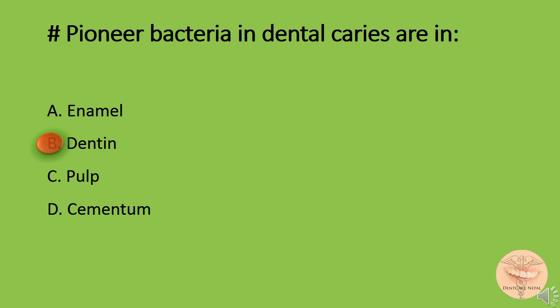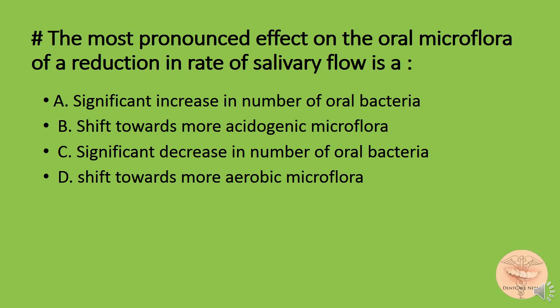The correct answer is B: dentin. The most pronounced effect on the oral microflora of a reduction in rate of salivary flow is: A) a significant increase in number of oral bacteria, B) shift towards more acidogenic microflora, C) significant decrease in number of oral bacteria, or D) shift towards more aerobic microflora. The correct answer is B: shift towards more acidogenic microflora.